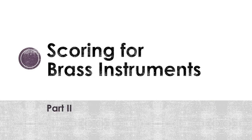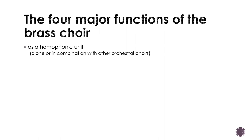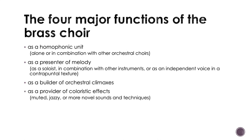Hello. In this video, we are going to continue talking about scoring for brass instruments. We are going to talk especially about the combination of brass instruments with other orchestral sections. Let's remember the four major functions of the brass choir as a homophonic unit: alone or in combination with other orchestral choirs, as a presenter of melody, as a soloist in combination with other instruments, or as an independent voice in a contrapuntal texture, as a builder of orchestral climaxes, and finally, as a provider of coloristic effects — muted, jazzy, or more novel sounds and techniques. We are going to see and talk about some examples for each of these functions.